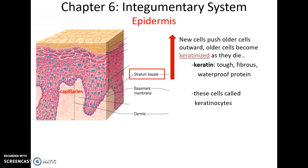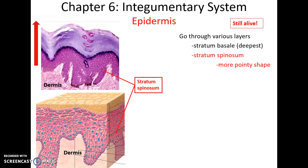During this process, these cells become keratinized — they fill up with tough, fibrous, waterproof proteins called keratin. However, as they become keratinized, these cells will die — an example of apoptosis, or programmed cell death. It's worth noting that these primary cells are called keratinocytes.